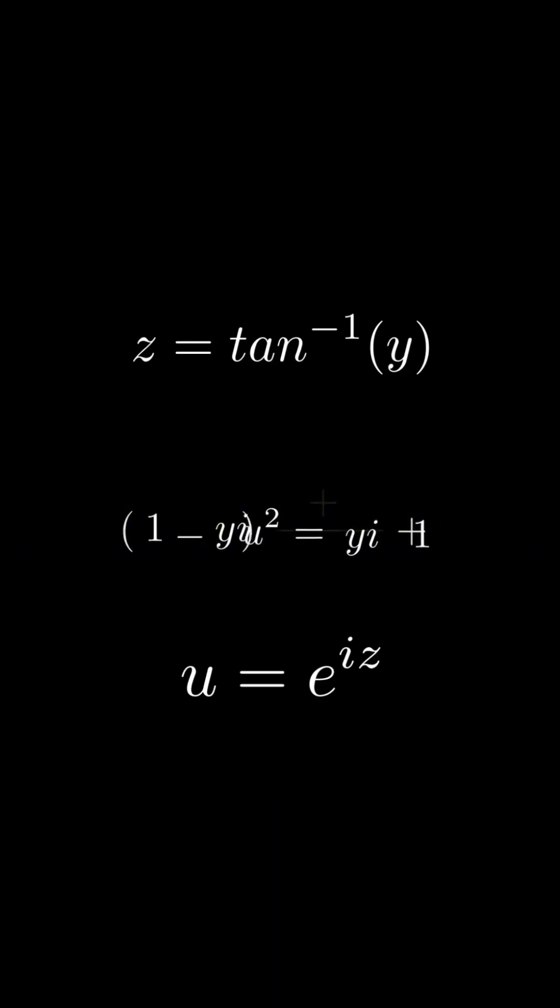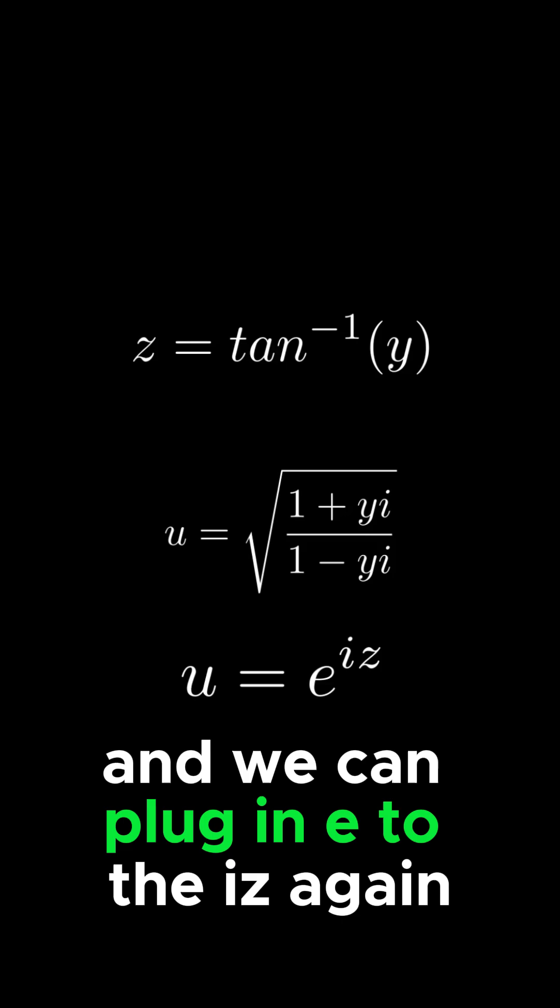Then divide both sides, and then we can take the square root, and we can plug in e to the iz again.